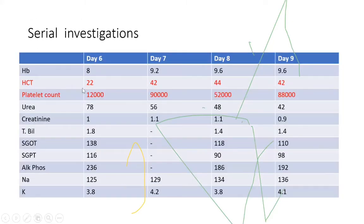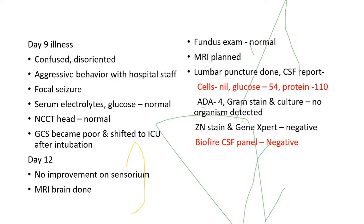Serial investigations on days 6, 7, 8, and 9 showed platelet drop, transaminitis, and rising hematocrit. Seeing this clinical scenario, the first diagnosis that comes to mind is dengue fever and management remained conservative. But on day 9, the patient became confused and disoriented, had a seizure, became aggressive with hospital staff, and GCS became very poor. The patient was intubated and shifted to ICU.